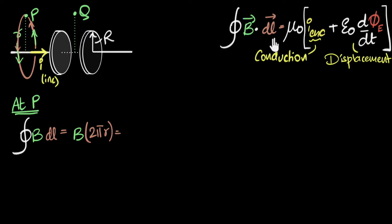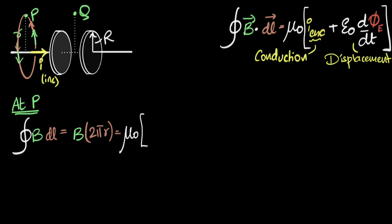Now for the right-hand side: μ₀ times I enclosed plus the displacement current term. I enclosed is the current punching through a surface attached to the loop. Imagine dipping the loop in soap solution — a flat surface attaches. The current punching through that flat surface for point P is just I. So the enclosed current is I.